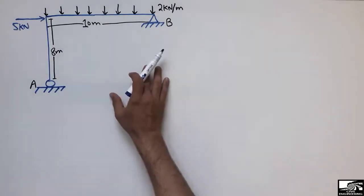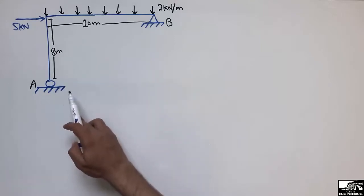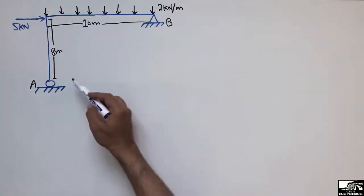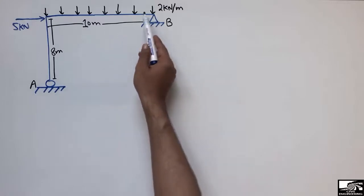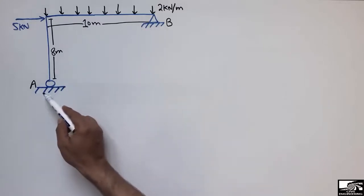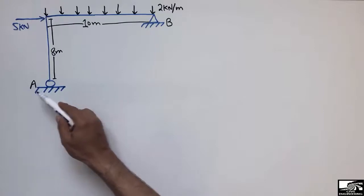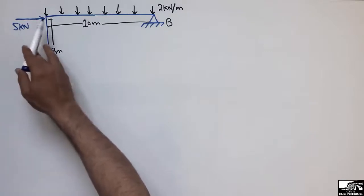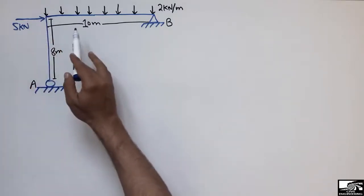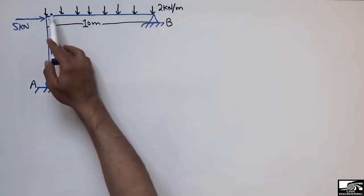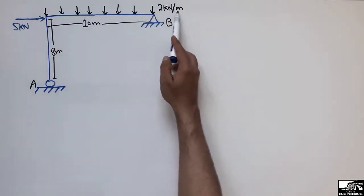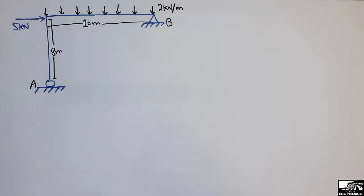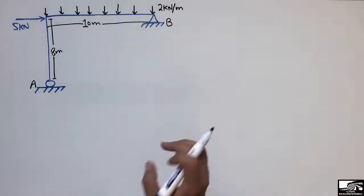We will also find the support reactions first, so that we can draw the shear force and bending moment diagram for this frame. The frame is supported by two supports: one is the roller support at point A, and the other is the hinge support at point B. A 5 kN load acts in the lateral direction at the joint of the frame, and the beam is loaded with 2 kN per meter over a length of 10 meters. This other length is 8 meters.